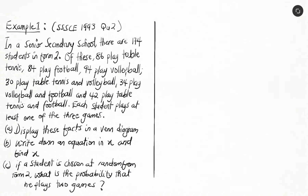Part A: display these facts in a Venn diagram. Part B: write down an equation in X and find X. Then, if a student is chosen at random from form 2, what is the probability that he plays two games? Let's go ahead and look at the solution to this problem.